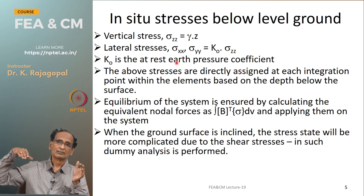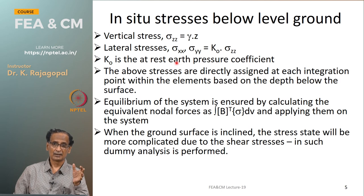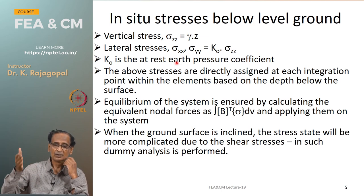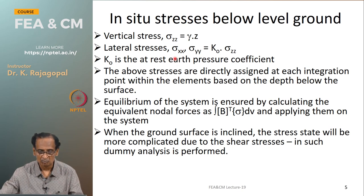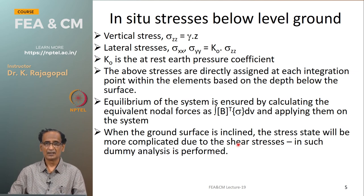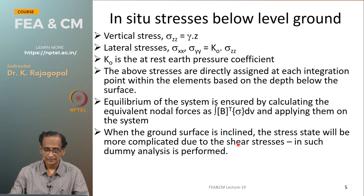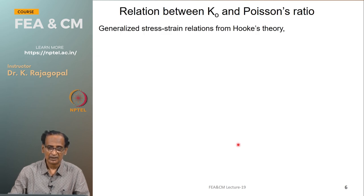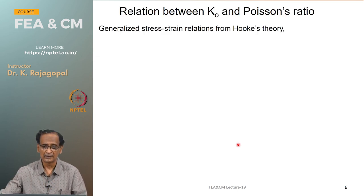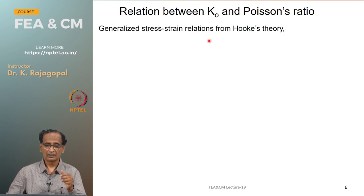This method of directly specifying in-situ pressures works only when you have a horizontal level ground, where the shear stress tau_xy is zero. But if you have inclined ground, there will be some shear deformations and normal stresses may change. In that case, we perform an initial finite element analysis with some Poisson's ratio corresponding to our K0, using the relation between K0 and Poisson's ratio derived from Hooke's relations.